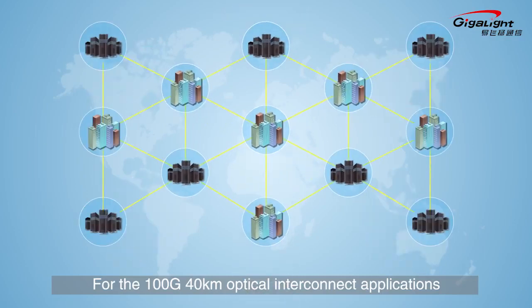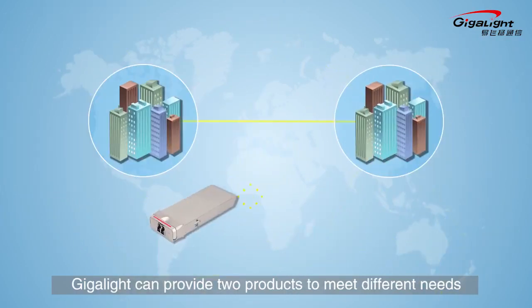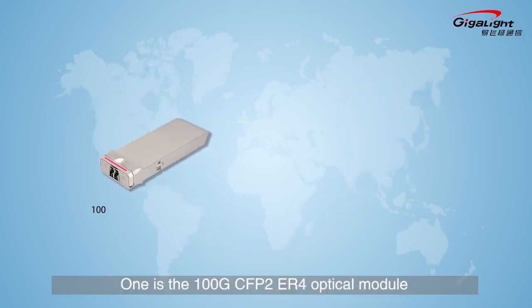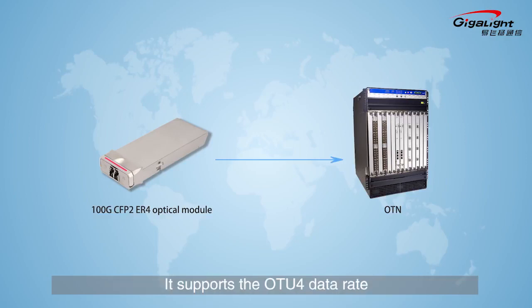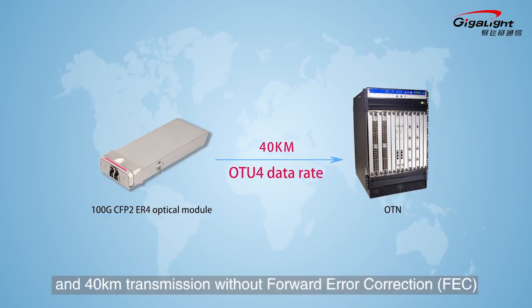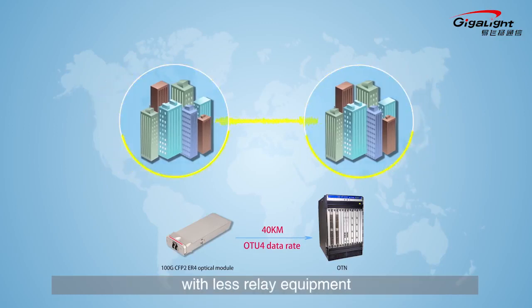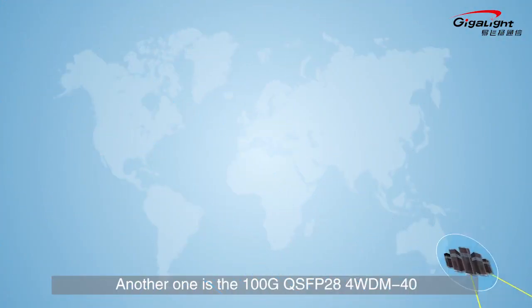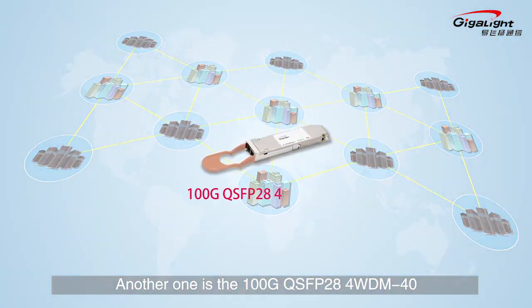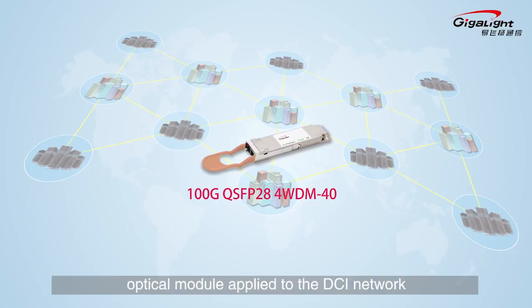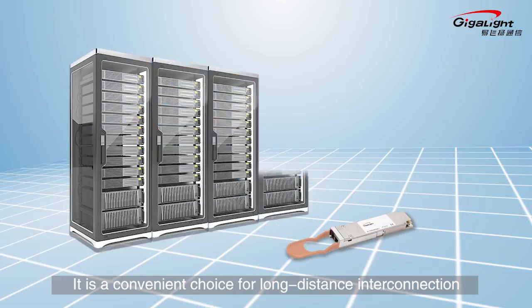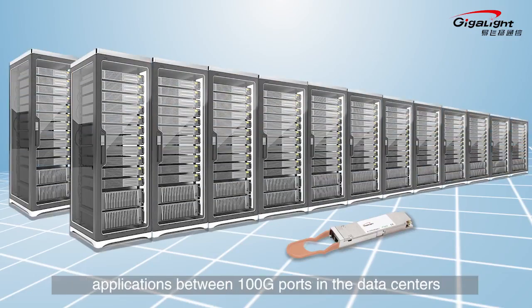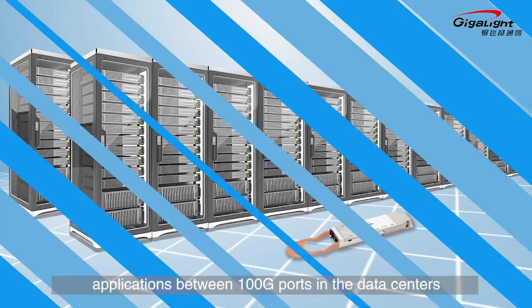For 100G 40-kilometer optical interconnect applications, Gigalite can provide two products to meet different needs. One is the 100G CFP2 ER4 optical module applied to the optical transport network. The other is the 100G QSFP28 4WDM40 optical module applied to the DCI network — a convenient choice for long-distance interconnection between 100G ports in data centers.